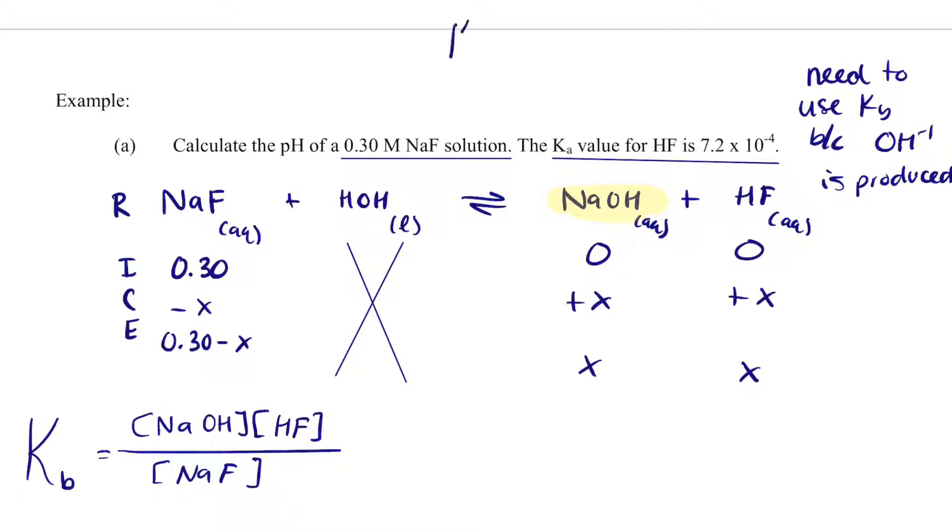So if you remember, Kw is equal to Ka times Kb. Kw is 1 times 10 to the minus 14. That equals Ka, which we're given, 7.2 times 10 to the minus 4 times Kb. And Kb is equal to 1.39 times 10 to the minus 11.